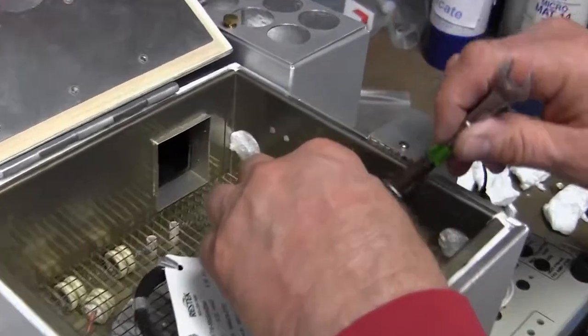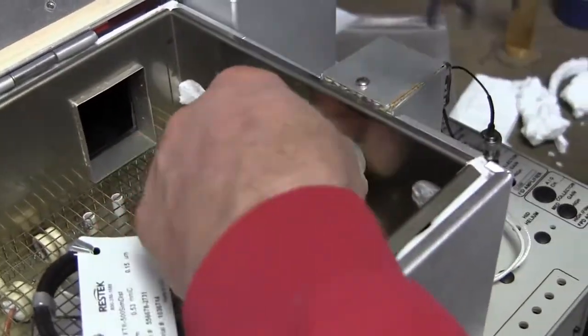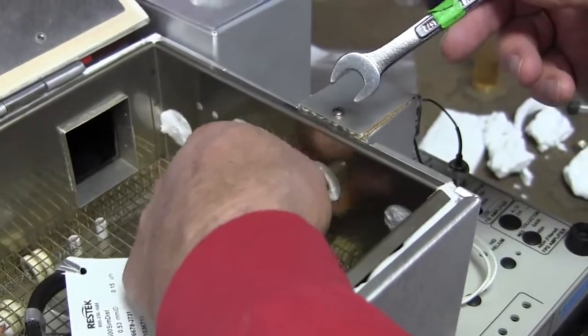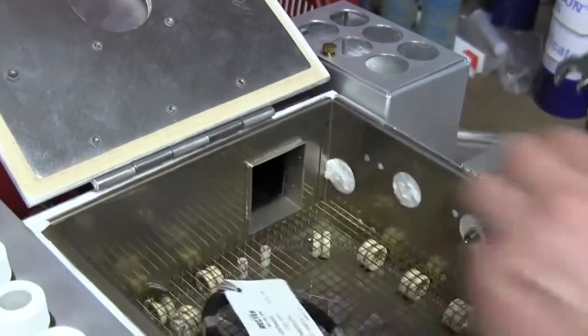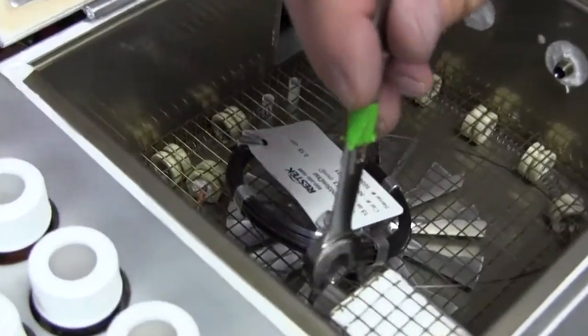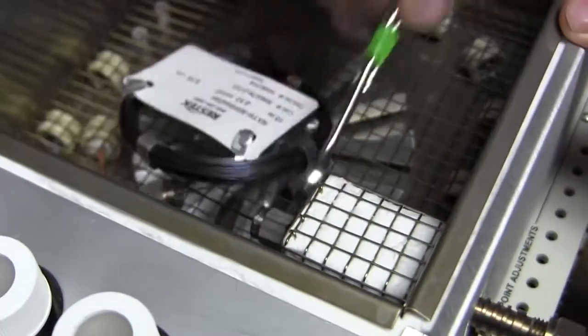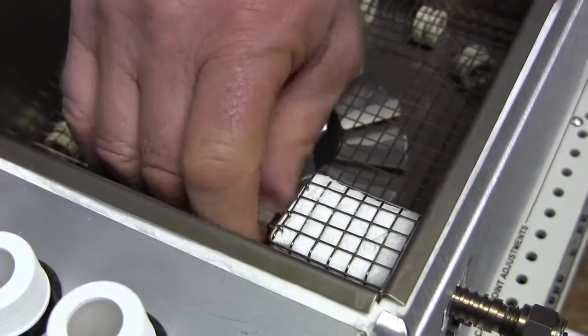So first, remove the column from the detector. Take a wrench, a 7-16 wrench, loosen the nut and the ferrule which hold the column in the FID detector. Same wrench, remove the nut holding the column in the heated injector.